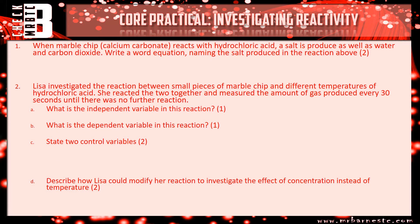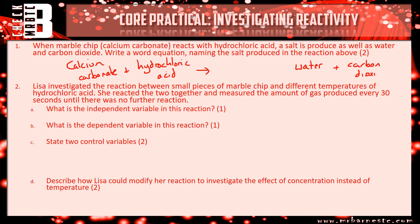Let's have a look at the answers. Marble chip is my calcium carbonate, and I'm reacting it with hydrochloric acid. I know that I'm going to get water and carbon dioxide - the question tells me that. So the next thing is naming the salt: you take the name of the metal, which in this case is calcium, and then look at your acid - it's hydrochloric acid, therefore I have a chloride. So you get one mark for calcium chloride being correct, and one mark for everything else being correct.